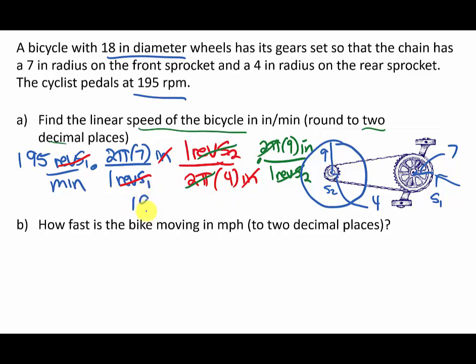To 2 decimal places, that's going to be 19,297.23, and that is inches per minute. That's the linear speed then of the bicycle.